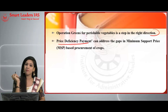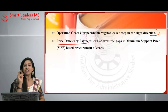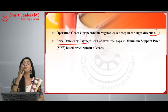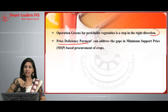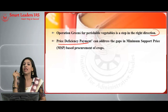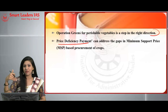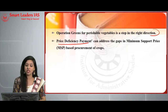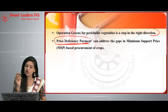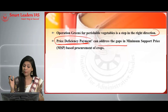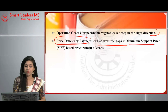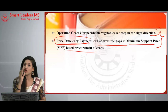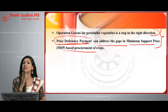Another important step is the Price Deficiency Payment scheme — a proposal to compensate the difference between the government-announced MSP and the actual market price for certain selected crops. For rice and wheat, MSP implementation continues as normal since they are the most important crops. For certain other targeted crops, Price Deficiency Payment can be offered, literally addressing the gap or disparity in MSP-based procurement.